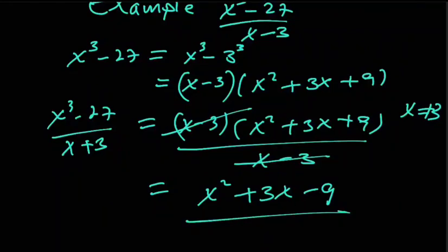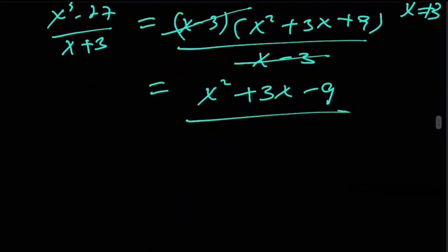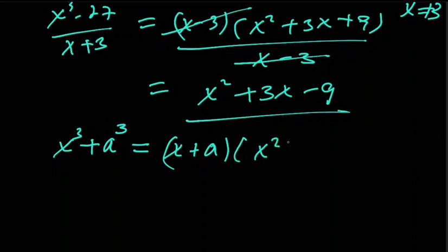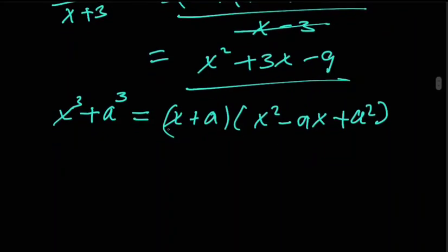The next identity to discuss is x cubed plus a cubed. This factors as x plus a times x squared minus ax plus a squared. You can pause the video and check that x plus a times x squared minus ax plus a squared equals x cubed plus a cubed.